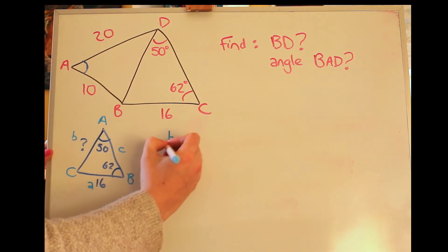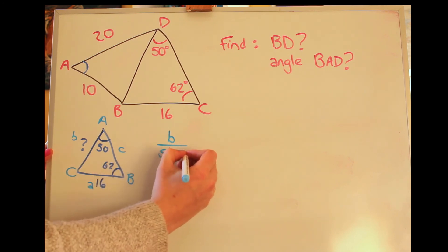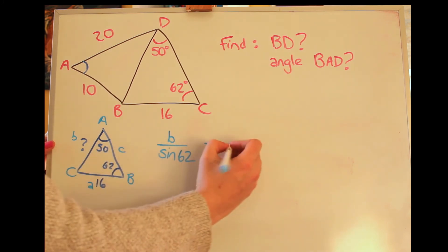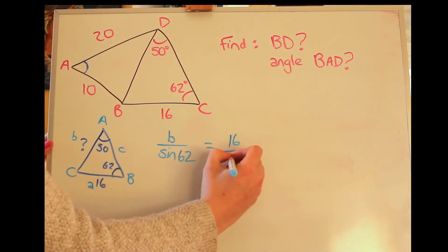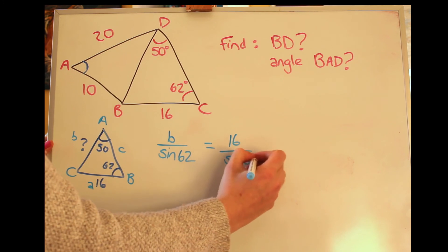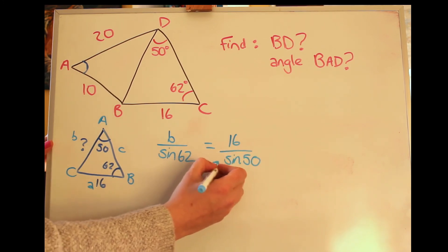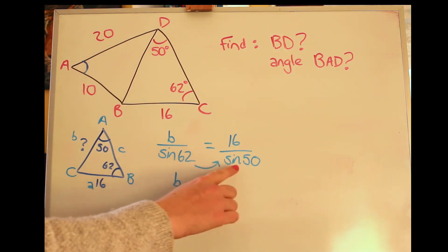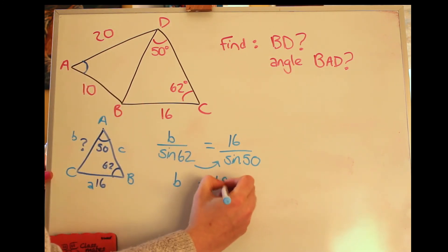And I'll put the unknown on the top, so the side on the top, b over sine B, that'll be 62, and it looks like the a's are the bits that we know, so 16 over sine of 50, multiplied by sine of 62, and I make that 18.44.